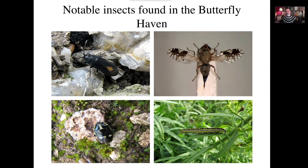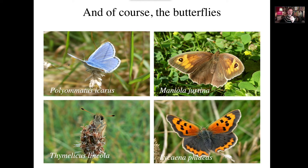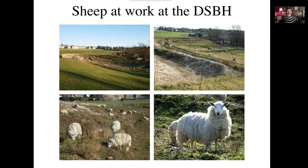There are the butterflies — in the first year we had the common blue and the meadow brown, probably the most abundant species in the UK, and then the Essex skipper and the small copper. Really pleasing to see those species on the site in the first year.